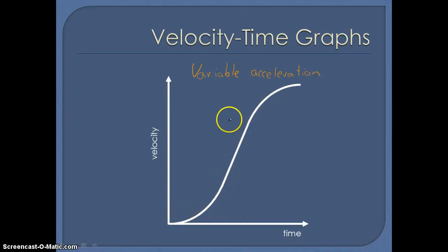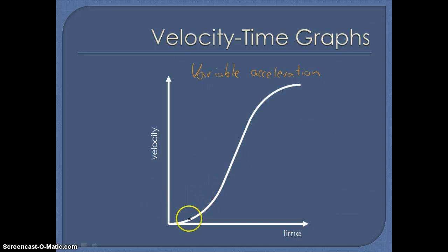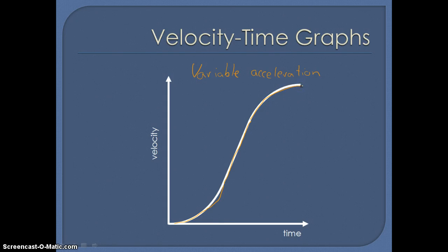The straight-line graphs we've just looked at don't allow for any gradual change between one value and the next. The curve here starts with a shallow gradient — a low acceleration — which gradually increases, becoming pretty much a straight line in the middle indicating constant acceleration, before the acceleration gradually decreases again at the top until we reach a steady speed. This is a much more realistic model for motion in real life.